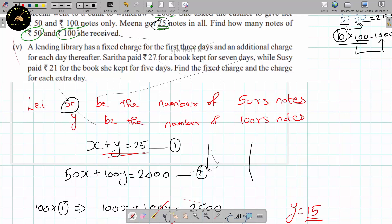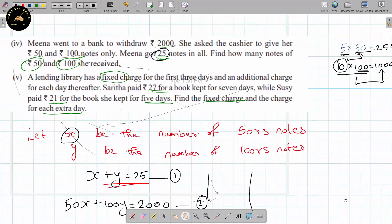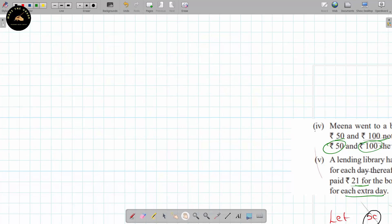A lending library has a fixed charge for the first three days and an additional charge for each day thereafter. Saritha paid 27 rupees for a book kept for 7 days, while Suzy paid 21 rupees for a book kept for 5 days. Find the fixed charge and the additional charge. Let x be the fixed charge and y be the additional charge.